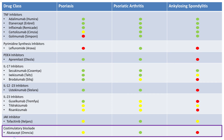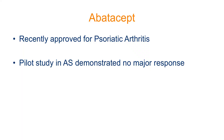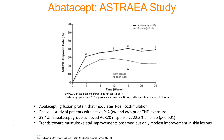Last but not least, the newest to market — abatacept, which we're familiar with from the RA world. Notably, there is a red dot over ankylosing spondylitis, meaning it's not moving forward there. Early AS studies didn't show a major response, so development in that space has stopped. The ASTREA study showed a moderately robust ACR-20 response for psoriatic arthritis but only modest skin improvement. So this would be a good candidate for a patient who has more joint disease and less skin involvement.